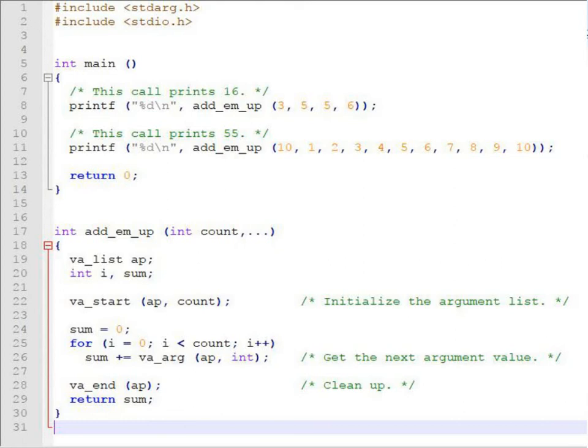Another call to add underscore em underscore up is given in line number 11 in printf statement. Here count will take the value as 10 as there are 10 optional arguments, and then ellipsis will take 10 optional arguments that is 1, 2, 3 and so on up to 10. And after doing the operation it will return the value as 55 in the main function.